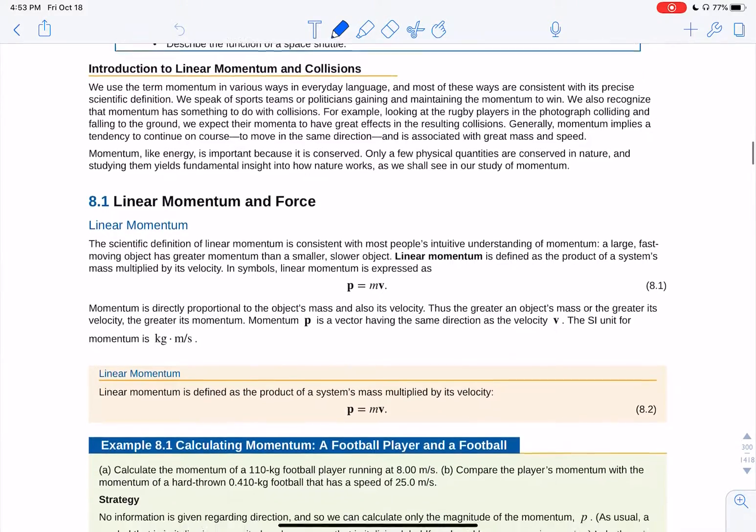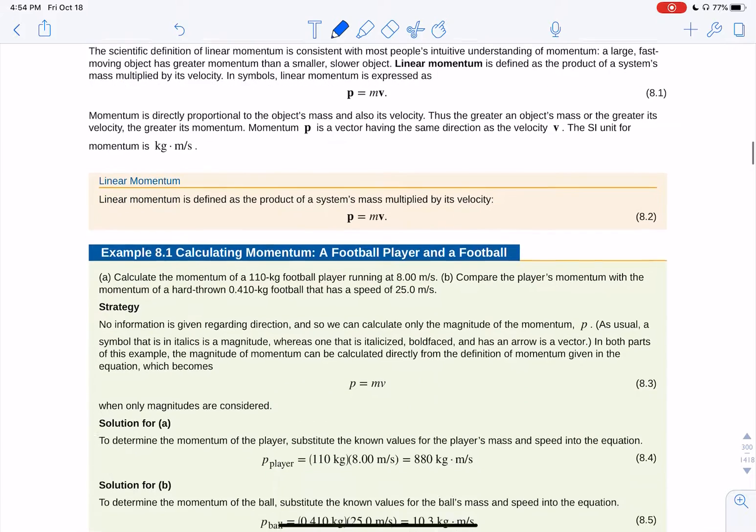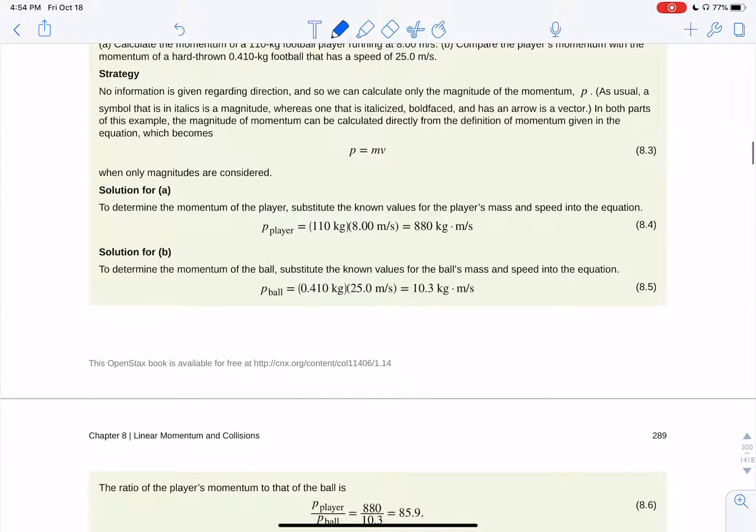Okay, so momentum. Anything that moves with a velocity of V and has a mass of M has something called momentum, and it's how difficult it is to stop it once it gets moving. Momentum is defined as mass times velocity of an object. If something is moving at 8 meters per second and it's 110 kilograms, then the momentum is just MV.